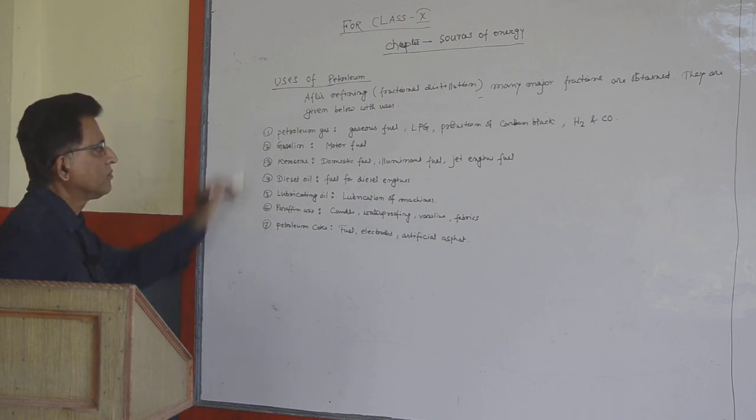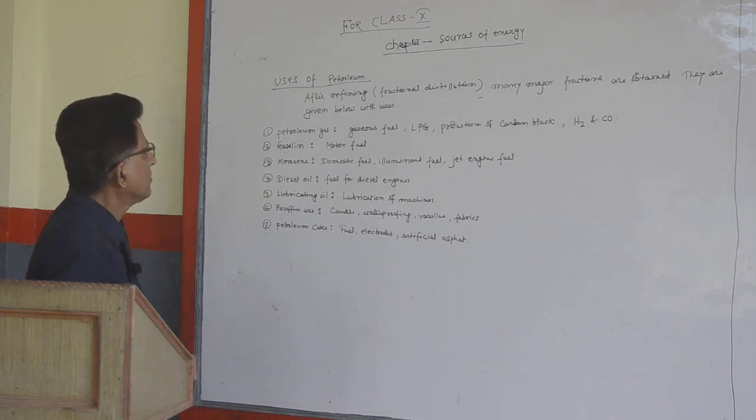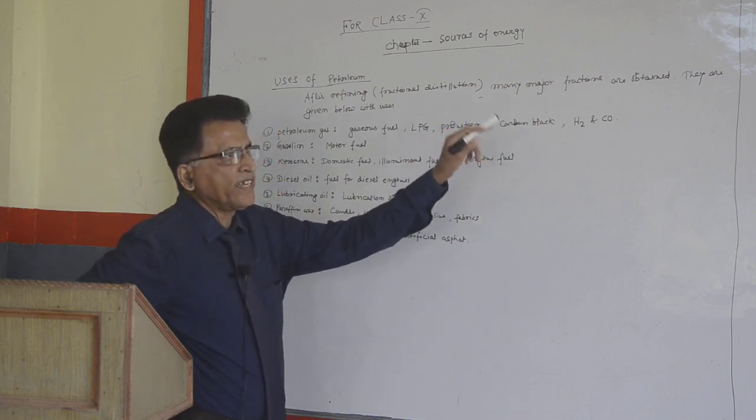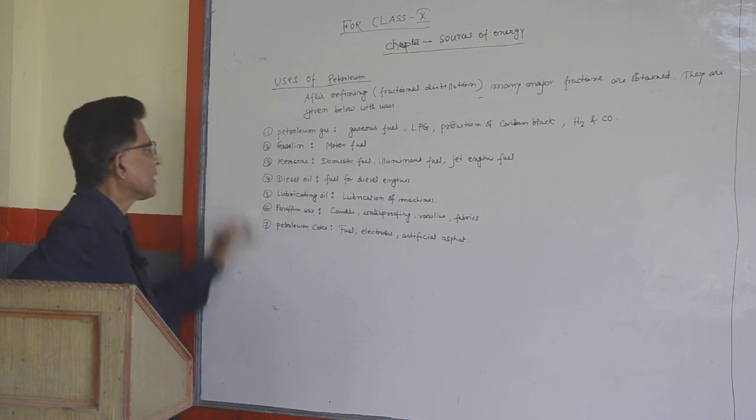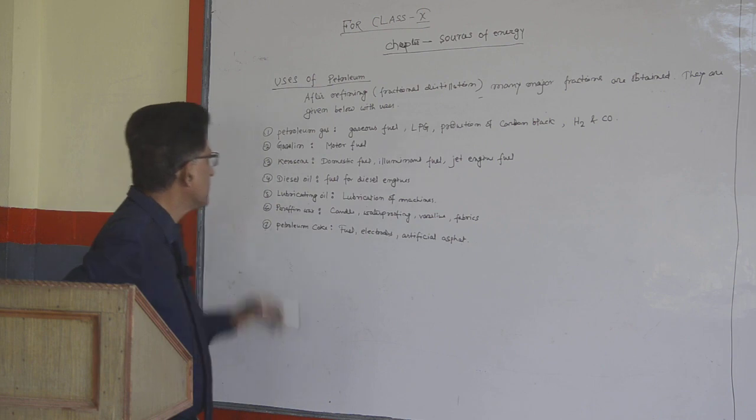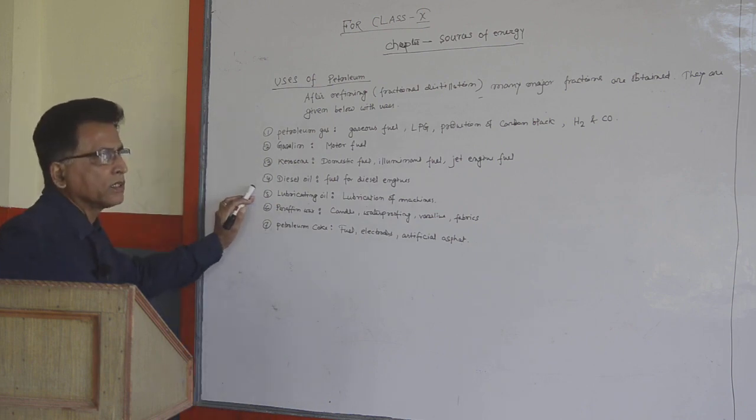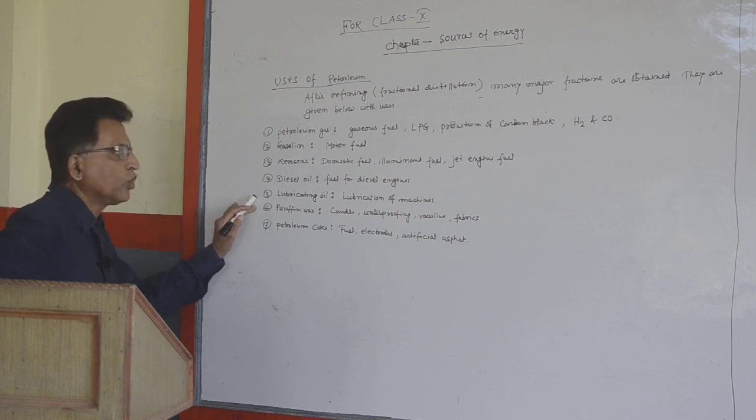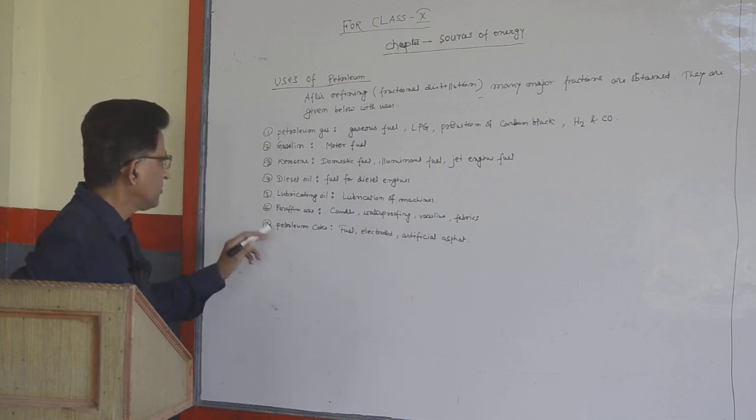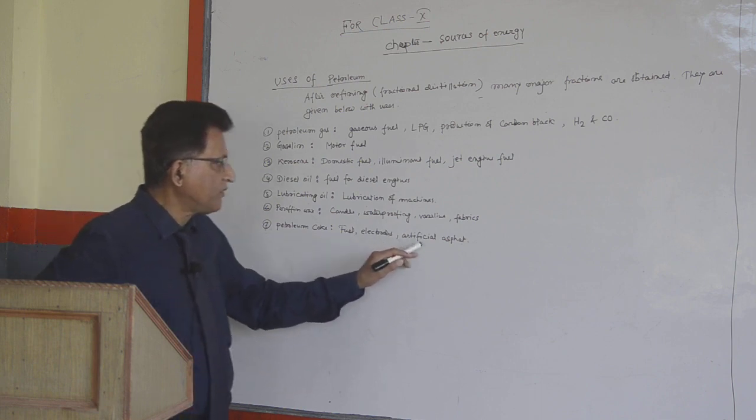Number 1, Petroleum Gas: Gaseous fuels, LPG, production of carbon black, hydrogen and carbon monoxide. Gasoline: motor fuel. Kerosene: domestic fuel, illuminant fuel and jet engine fuel. Diesel oil: fuel for diesel engine. Lubricating oil: lubrication of machines. Paraffin wax: candle, waterproofing, Vaseline, fabrics. Number 7, Petroleum Coke: fuel, electrodes, artificial asphalt.